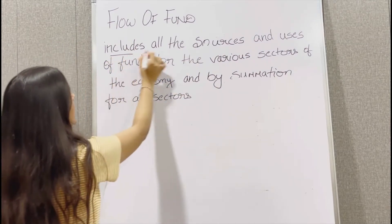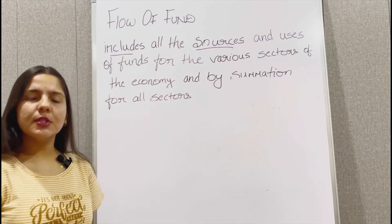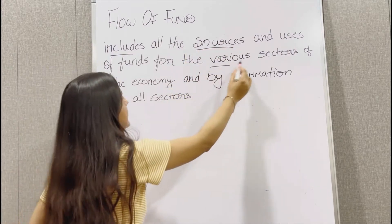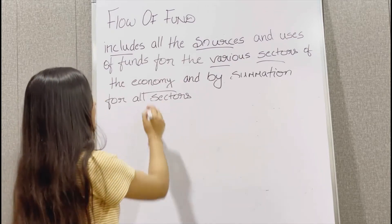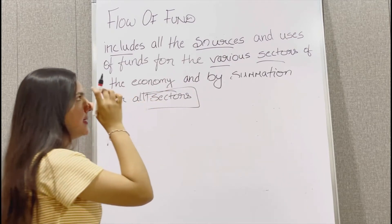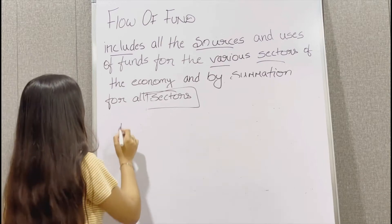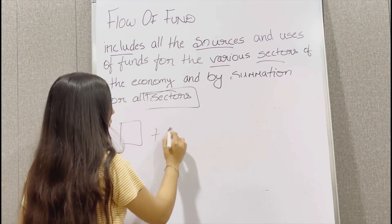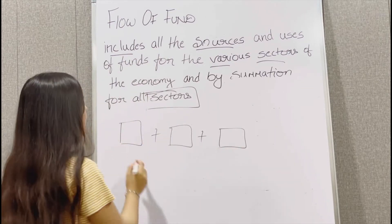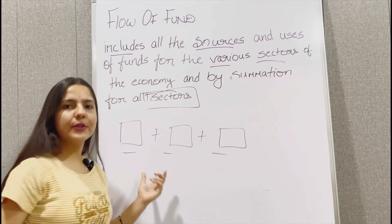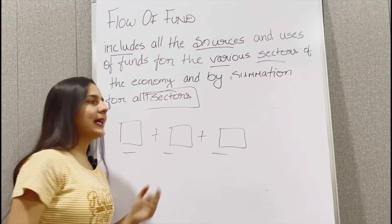Flow of funds include all the sources and uses of funds in various sectors of the economy and by the summation for all these sectors. Let's understand this. Suppose there is an economy, let's take an example, there are three sectors in an economy. Flow of fund is going to represent the sum of all the funds that flow in given sectors.